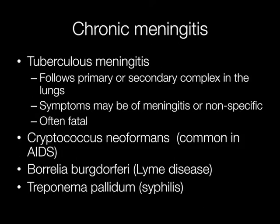There are a number of causes of chronic meningitis including tuberculosis, cryptococcus, Lyme disease, and syphilis. TB meningitis may follow a primary or secondary complex in the lungs; the symptoms are of meningitis or may be non-specific, and TB meningitis is very serious and often fatal. Cryptococcal meningitis is particularly common in AIDS patients. Infection with Borrelia burgdorferi causes Lyme disease and Treponema pallidum causes syphilis, and both these conditions can cause chronic meningitis.